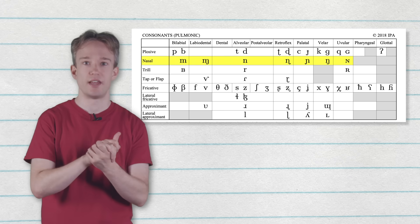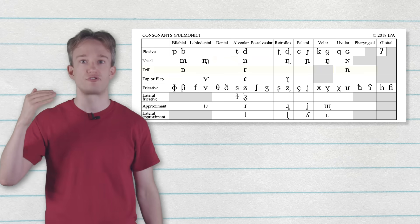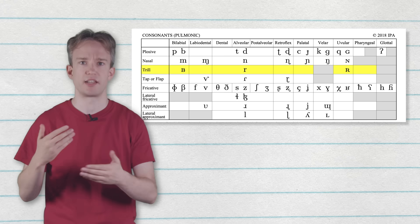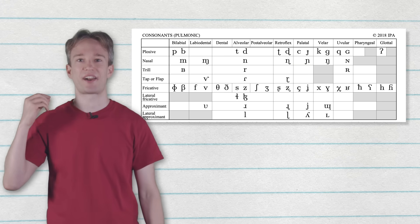The nasal line, next down, is all the sounds that you make through your nose. Then you have trills, which we don't have natively in most dialects of English, in which I'm therefore not great at pronouncing, other than a really over-the-top rrrrrrr.